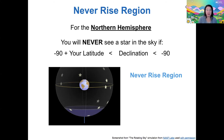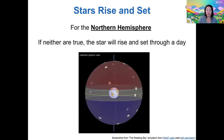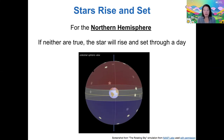So those are the circumpolar region and Never Rise region. There's a third region called the Rise and Set region. If you're not in the circumpolar region and you're not in the Never Rise region, then that star must rise and set throughout the day or year. This diagram is drawn for a very northern observer, so the circumpolar region has become larger and the Never See region is smaller.